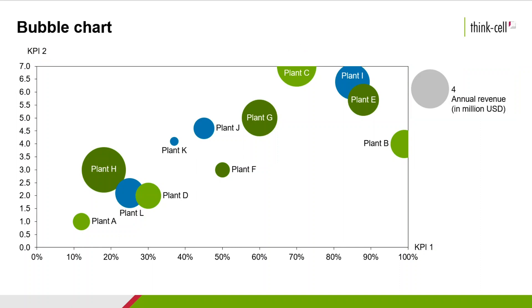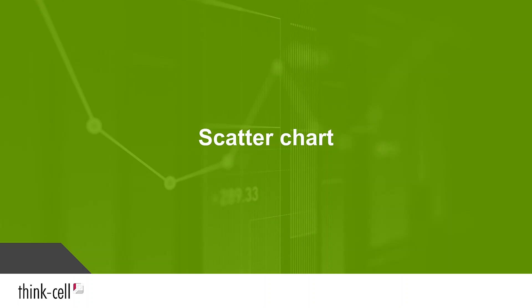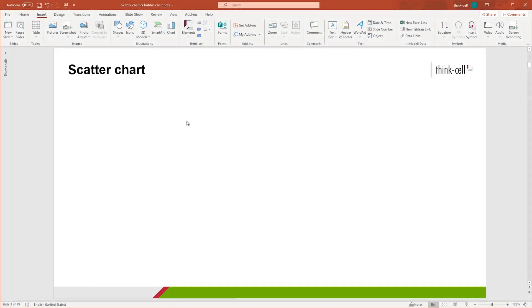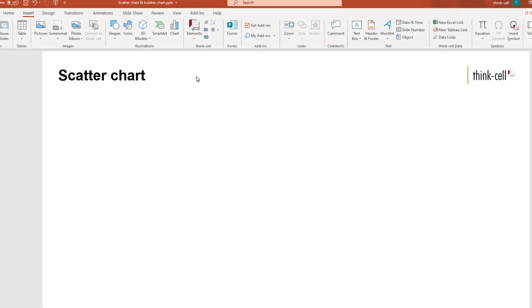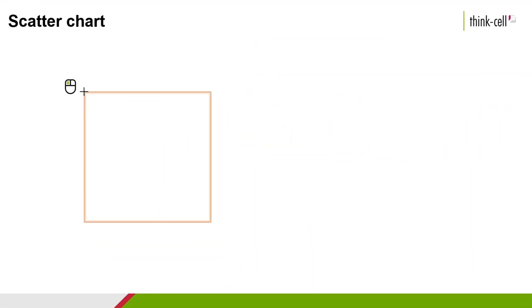Let's see how you can build these chart examples step-by-step. To insert a scatter chart, go to the ThinkCell group in the PowerPoint ribbon, open the Elements menu, and click on Scatter. Click again to place the chart on the slide.